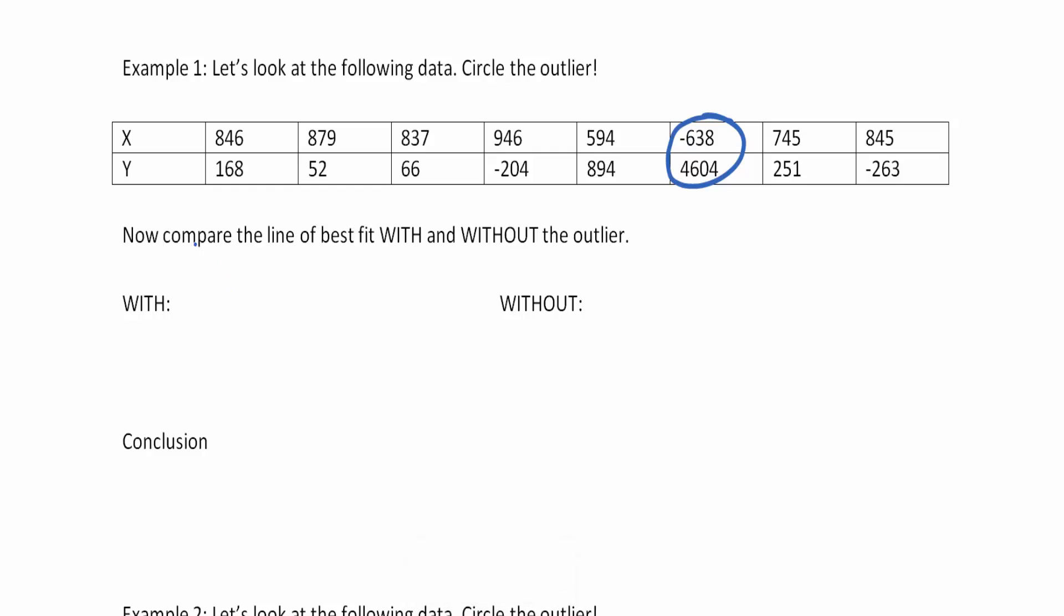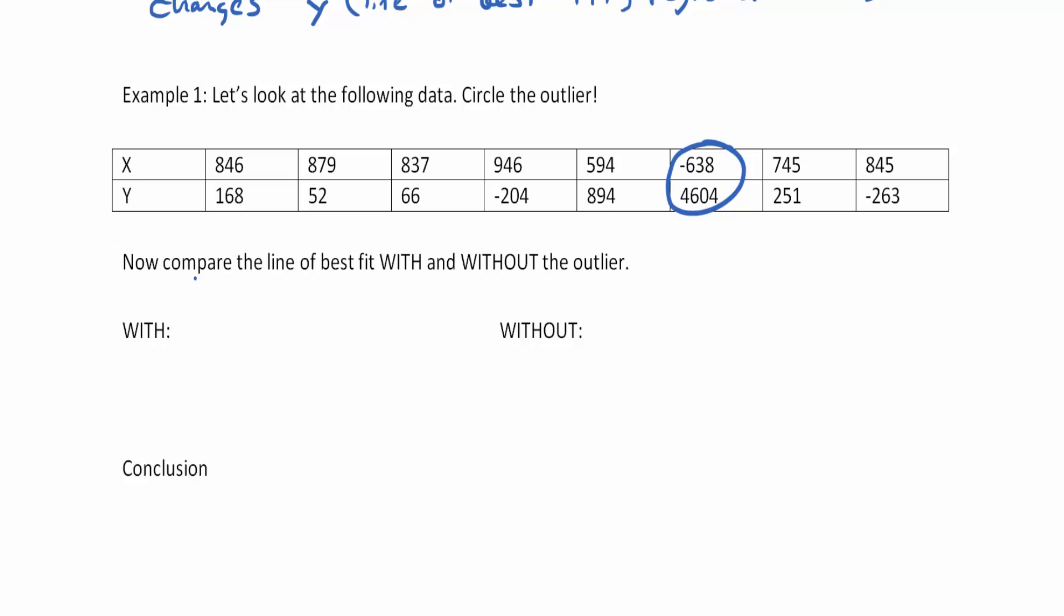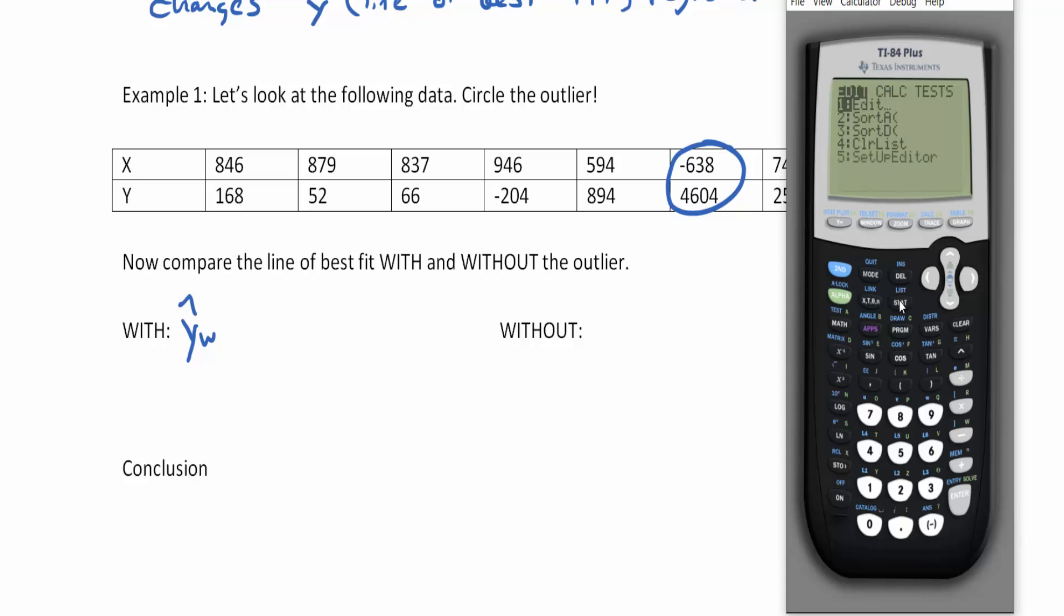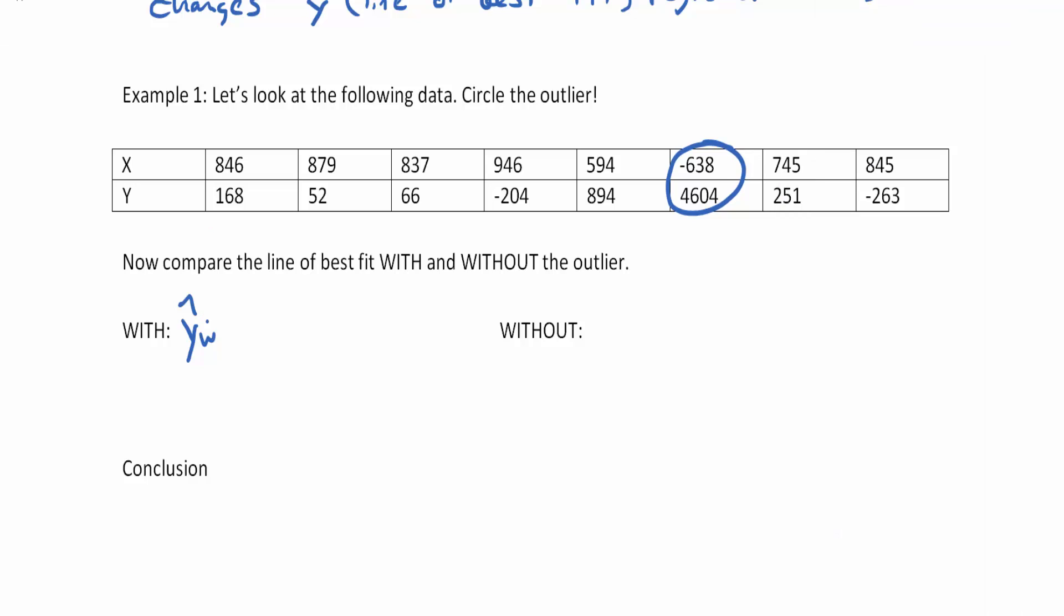Now, what I need to do is I need to check my line of best fit with and without the outlier. So my y hat with, which I'm going to use as a subscript w. This is going to be just the linear regression t-test based on this data set. So I'm going to go stat. I'm going to go to my tests. I'm going to go to my linear regression t-test. Scroll down to calculate. And I'm going to check my values here with my a and my b. So it looks like 2640.4 and negative 3.1.